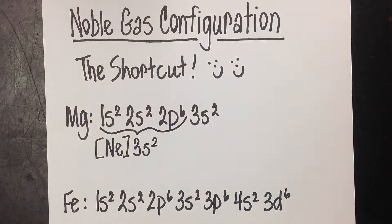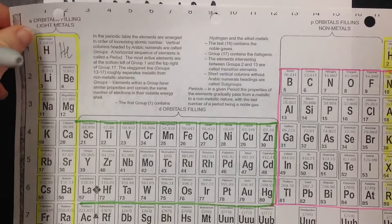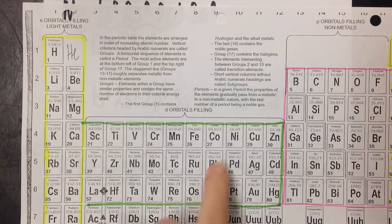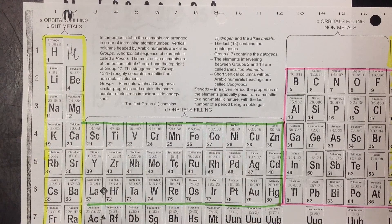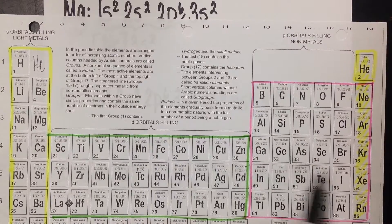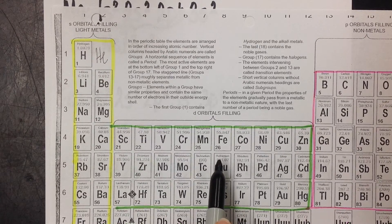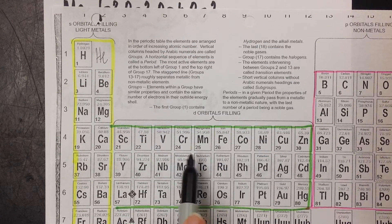Let's look at another one. Let's take a look at iron. We've got our electron configuration for iron, but we want to use the noble gas configuration. We're going to look at iron on the periodic table and work backwards. Always think backwards.